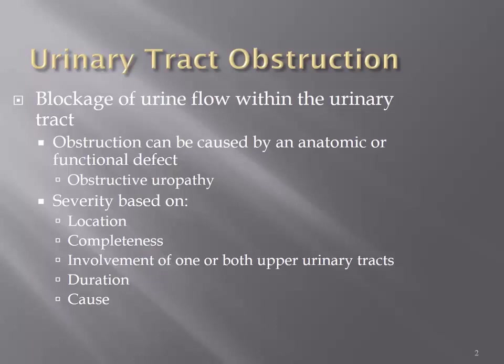There are two main sources of obstruction: either an anatomic or functional defect, and it can also be discussed as obstructive uropathy. Regardless of the cause — whether it's anatomic narrowing of the ureter or both ureters, obstruction by a tumor, or a stone — we still need to deal with the consequences. Our main concern is the obstruction itself.